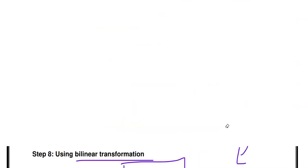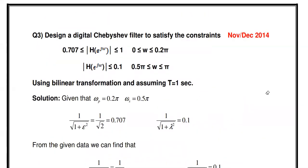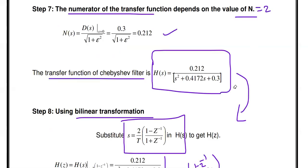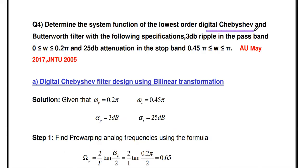This is the final answer and the complete design procedure for the digital Chebyshev filter. This question is from November/December 2014. In the next video, we are going to solve both the Chebyshev filter and the Butterworth filter for the same specification using bilinear transformation — which is also an important university question from May 2017 and JNTU 2005. Thanks for watching; please subscribe and press the bell notification button to get notified when new videos are posted.